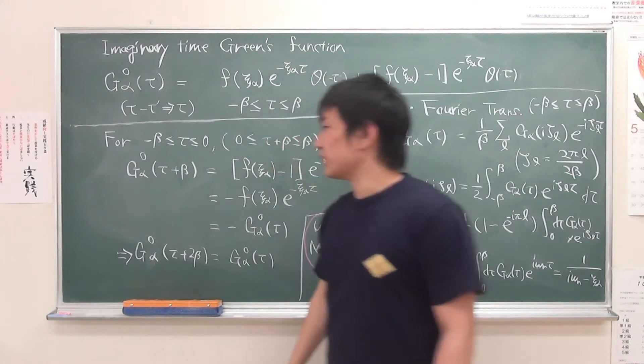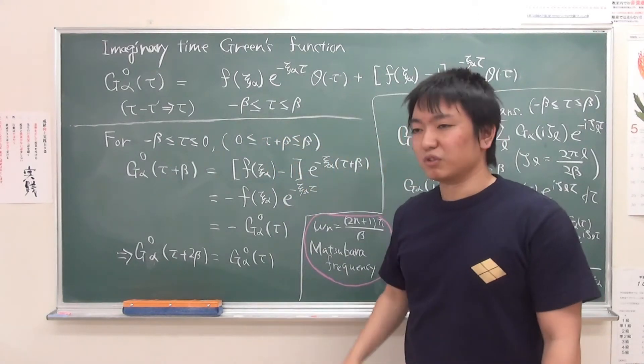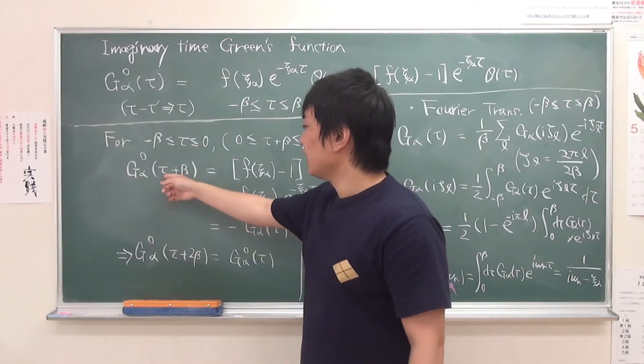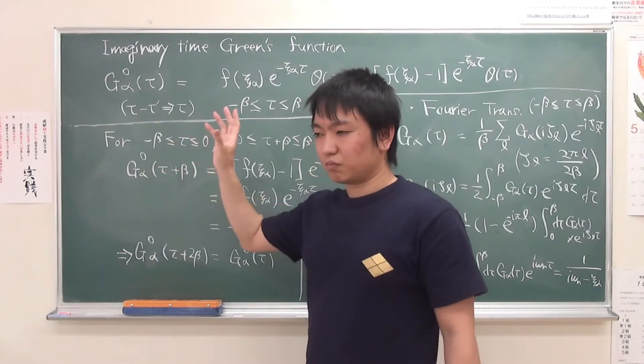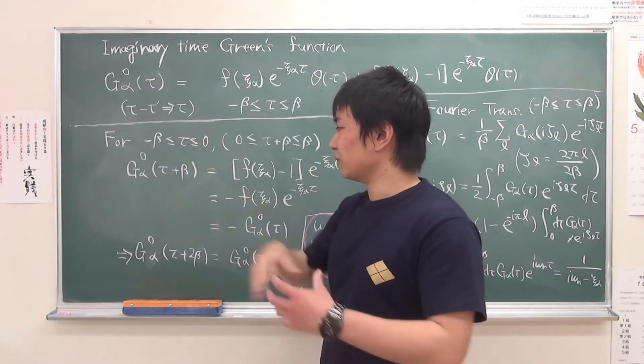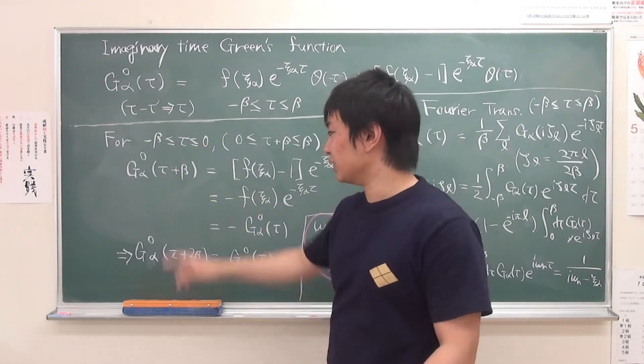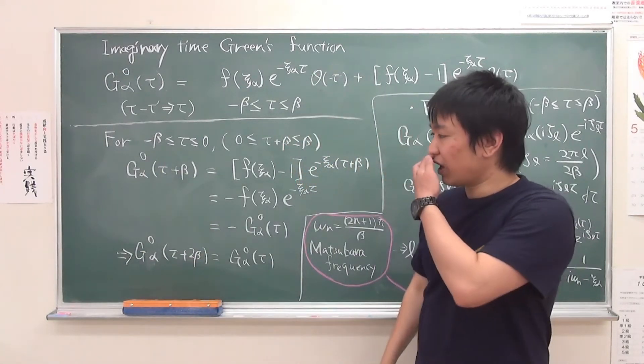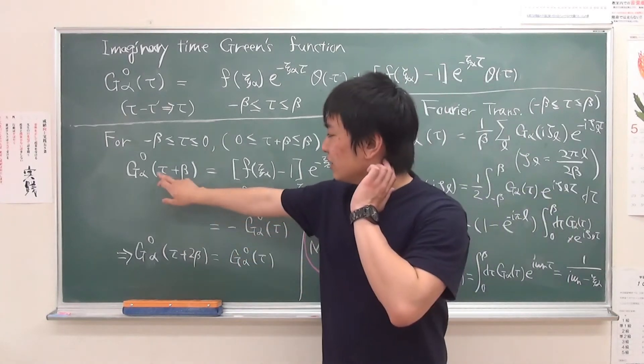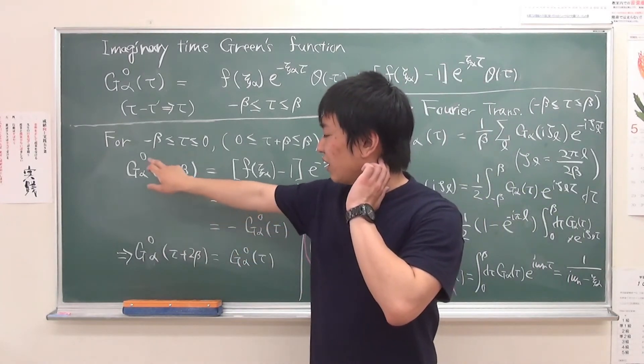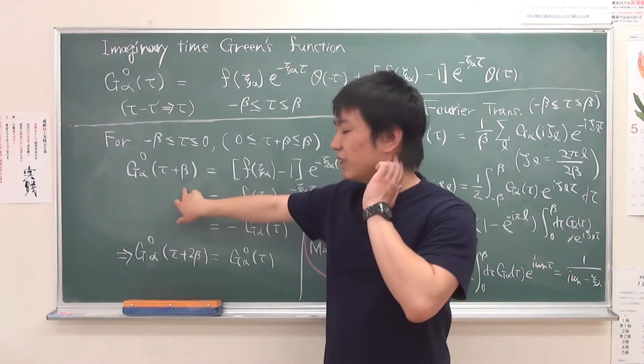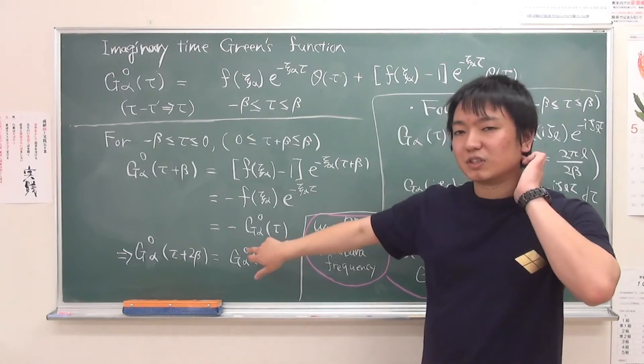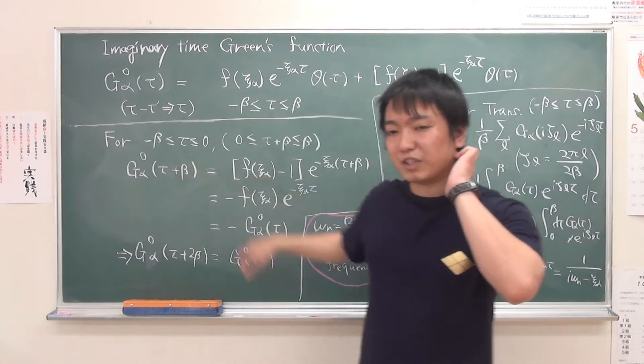So just consider what happens if we shift the tau. If you consider the shift to beta of this imaginary time function, we can easily obtain that G0(tau plus beta) is equal to minus G0(tau). So this is somehow anti-periodic.